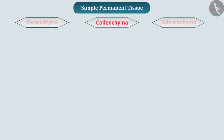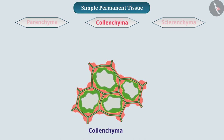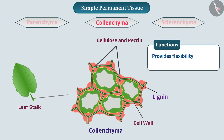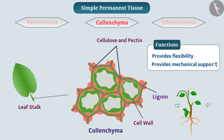Similarly, another plant tissue — collenchyma — is present in the leaf stalk. Cells of collenchyma tissue are live and long, and they contain cellulose and pectin, due to which the walls of cells at the corners are irregularly thick and there is very little space between them. Lignin is present in the corners of the cells of collenchyma tissue. Collenchyma provides flexibility to plants, due to which some parts such as stems and leaves bend easily without breaking, and it also provides mechanical support to plants.